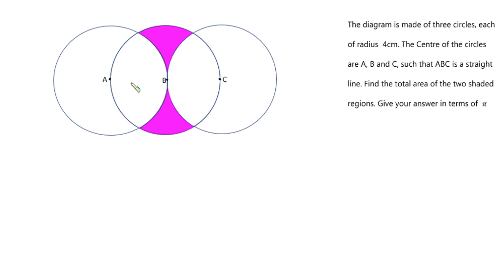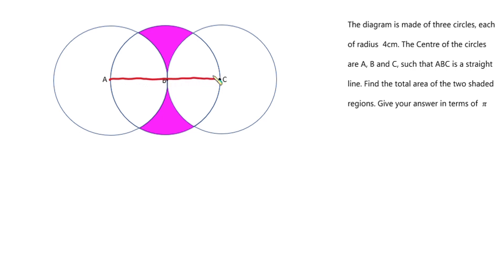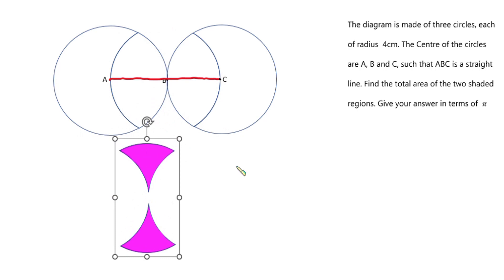So we have three circles here. The center of the first circle is A, the center of the middle circle is B, and lastly the center of the third circle is C. And from the problem, A, B, C is a straight line. So let's draw our straight line. And we have to find the area of this shaded region.